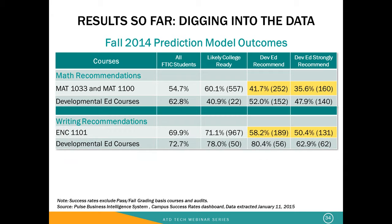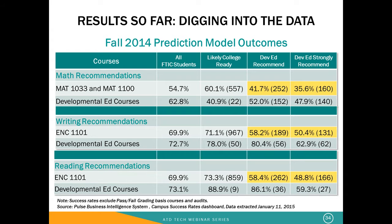Looking at reading and writing, the numbers skew even more. We believe this is partly a social stigma element — it's easy for students to talk about not being great at math with peers, but much more difficult to have the conversation about how well they read or write. As we move into those other disciplines, it's harder and harder for us to convince students — even with all the information we're providing — to make the choice of staying in remedial education. We see lower success rates and just need to figure out how to help them be successful.